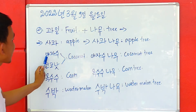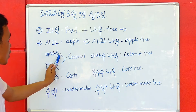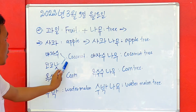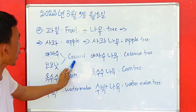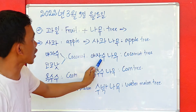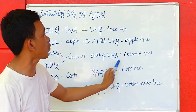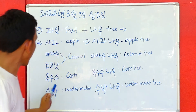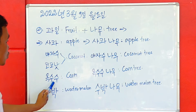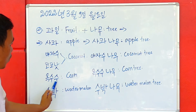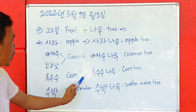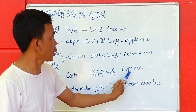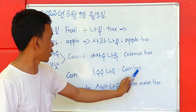And the next one: yajasu. Yajasu means coconut — the same in English. Yajasu, just plant namu. Yajasu namu means coconut tree. Next one: ok-susu. Ok-susu means corn, right? Ok-susu namu means corn tree, like this.